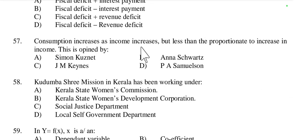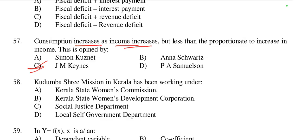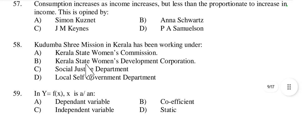Question 57: Consumption increases as income increases but less than proportionate to the increase in income. This is called the Psychological Law of Consumption, given by J.M. Keynes. When income increases, consumption increases — but not by the same amount as income. So option C is right.